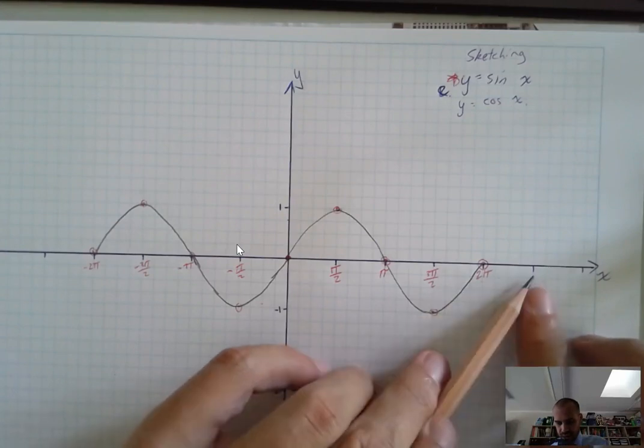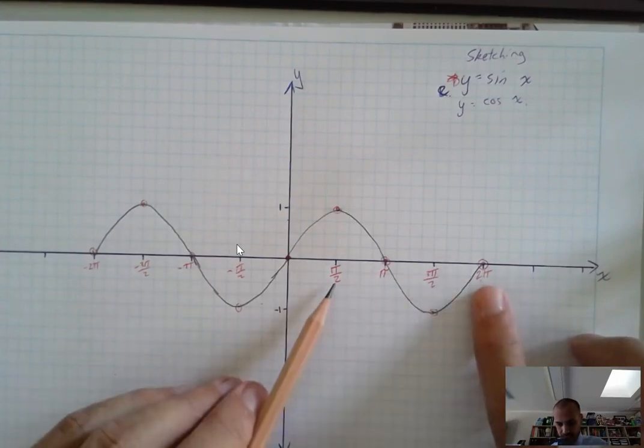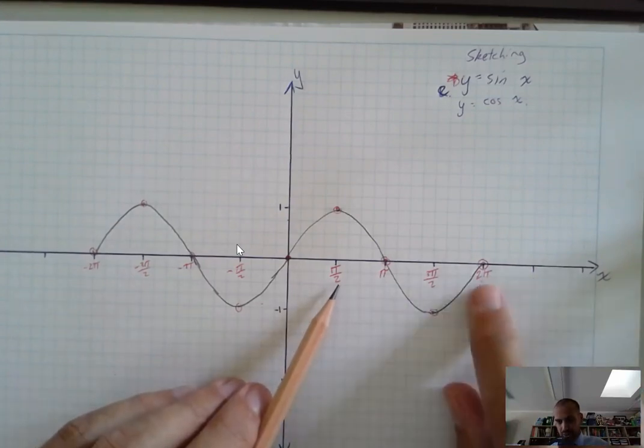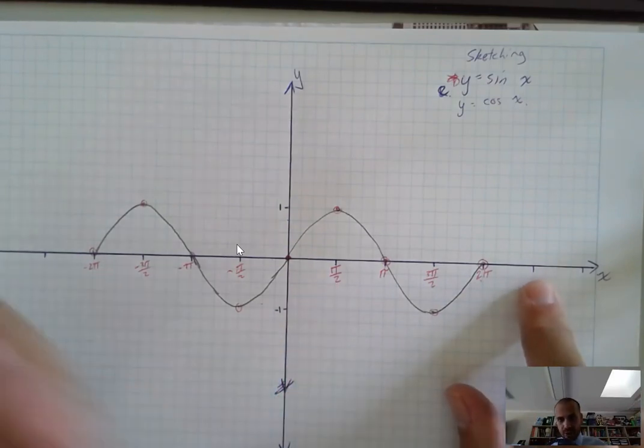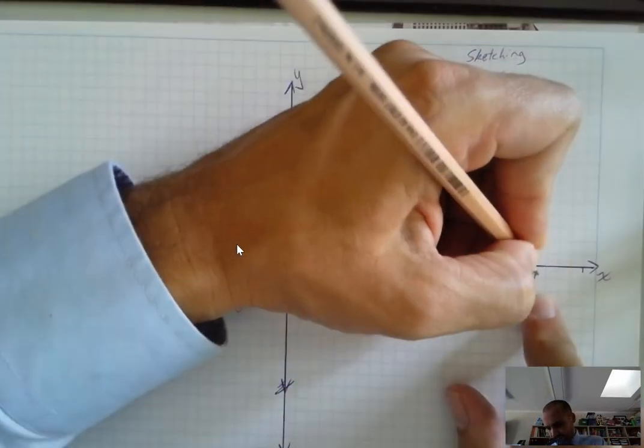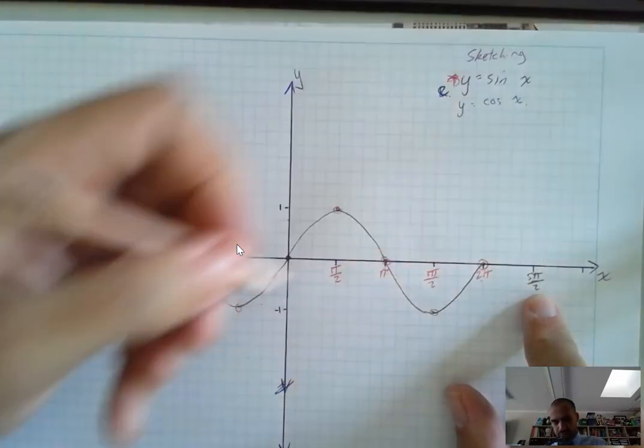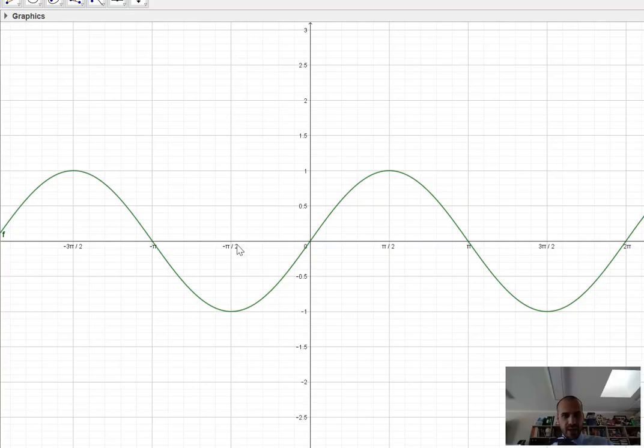Now this one here, this next bit here, two pi, and then each segment is pi on two. So this next bit would be two pi plus pi on two, which would be like five pi on two. Okay. That's what sine x looked like.